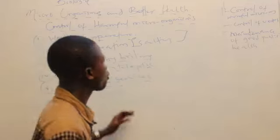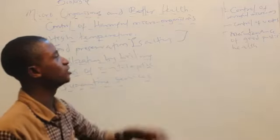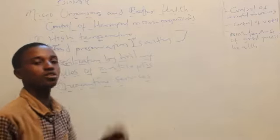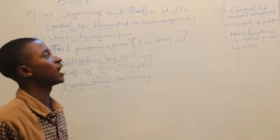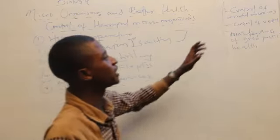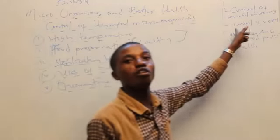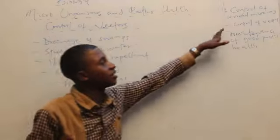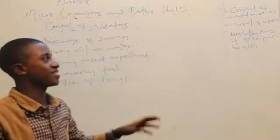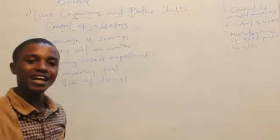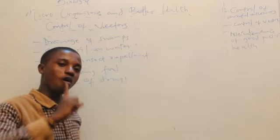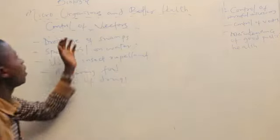So quarantine services can also be used. The use of disinfectants as well will work. Many other control measures can be used. Now we'll be looking at the control of vectors. I said earlier that vectors are animals that carry microorganisms. These microorganisms have the ability to cause disease.